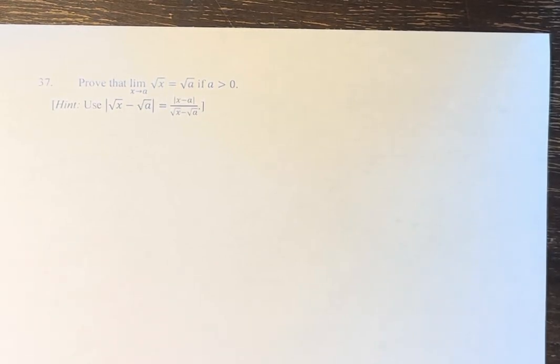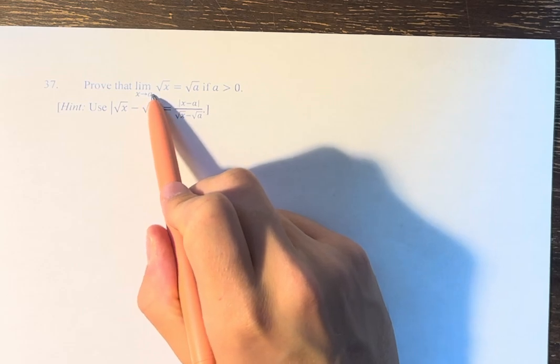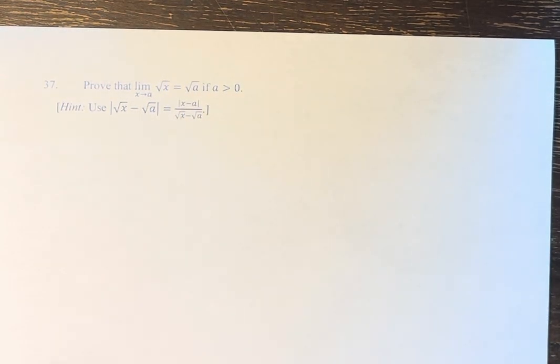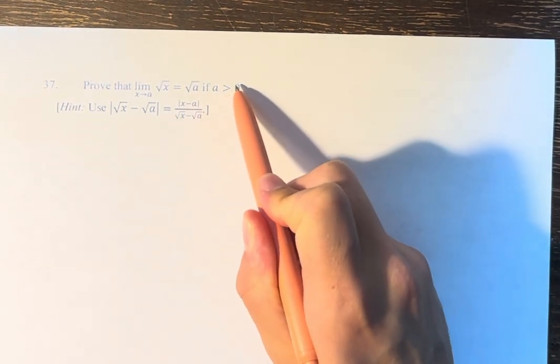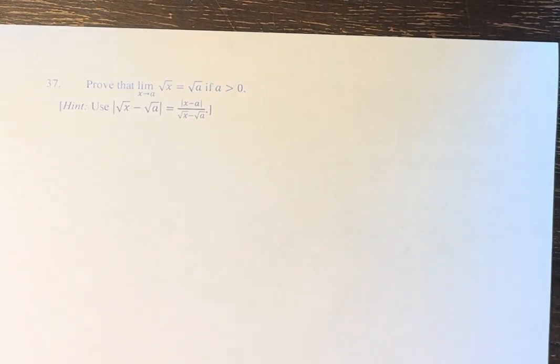Hello and welcome back to another video. In this problem, we're asked to prove that the limit as x approaches a of the square root of x is equal to the square root of a, if a is greater than 0.